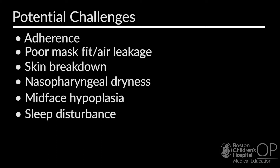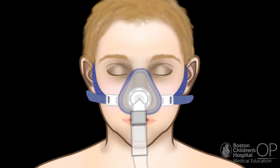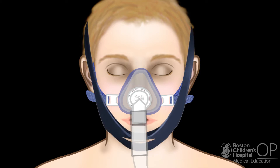Another challenge, particularly if feeds are being given via a feeding tube overnight, is the concern for gastric distension and risk of aspiration. This can occur with a full face mask as air can enter the stomach, causing distension. Caregivers may need to vent the tube or consider using a Farrell bag, which can allow the tube to vent continuously. It is strongly preferable to use nasal interfaces when possible to reduce air entering the stomach. The child may benefit from a chin strap to keep the mouth closed, especially if feeds are running overnight.